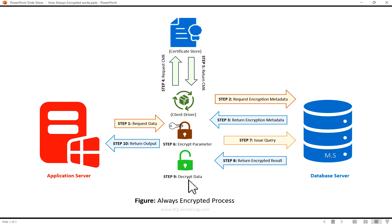In the next step, decrypt data, when the results include encrypted columns the client driver decrypts them before sending them back to the application. This decryption process relies on the encryption metadata provided alongside the results. Similar to how parameters are handled, the column encryption key is decrypted using the corresponding column master key. In some cases the column master key may have already been retrieved from the certificate store; if not, an extra step is taken to obtain it. Once decrypted, the unencrypted key value is used to decrypt the data within the associated column or columns.